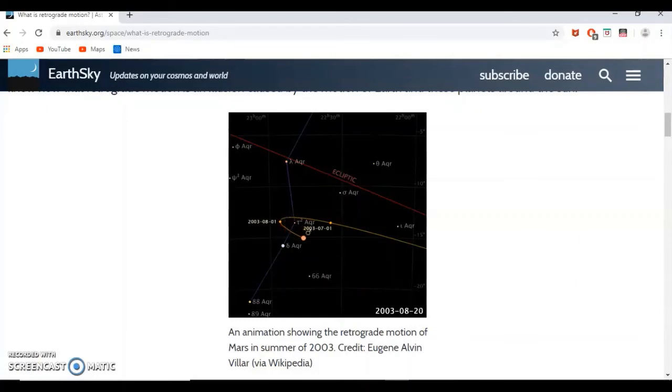As depicted by this gif, retrograde motions of the wandering stars or planets are simply just circular paths of these bodies in the sky. Nothing more is needed to explain this.